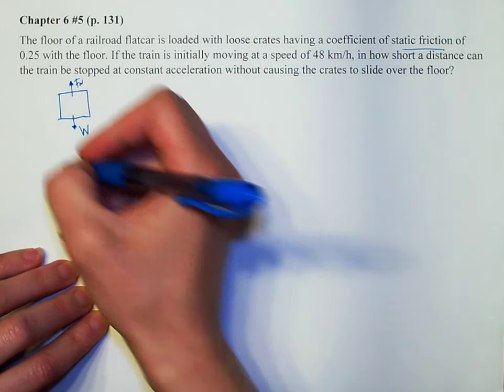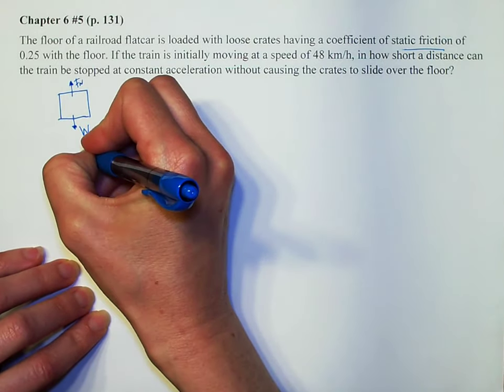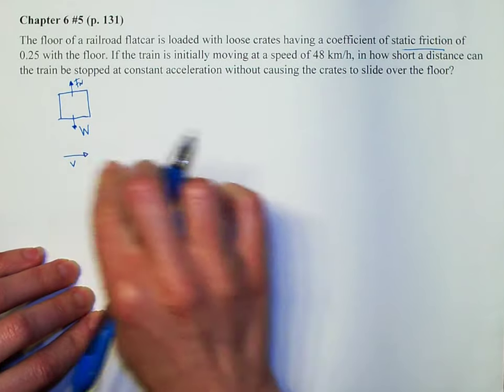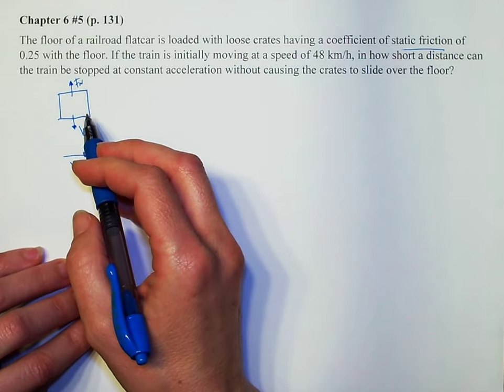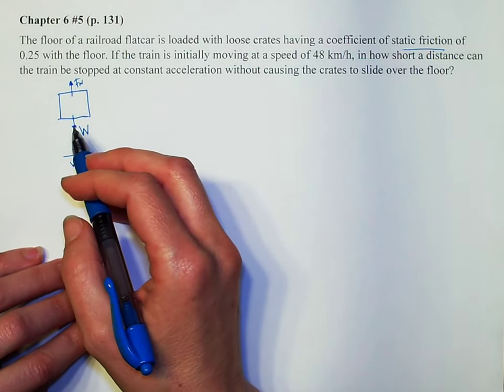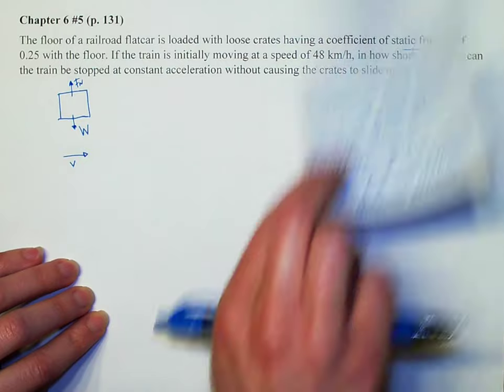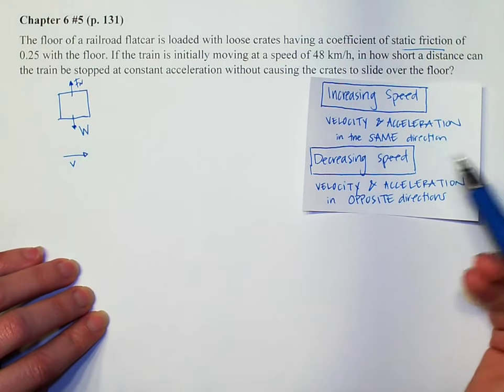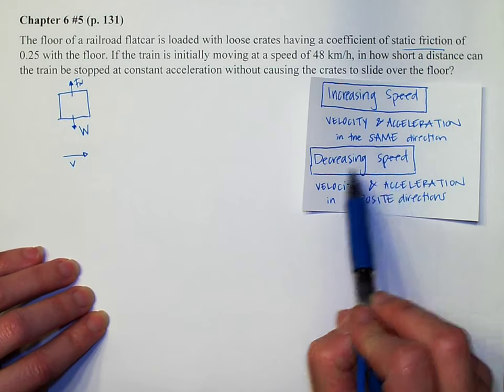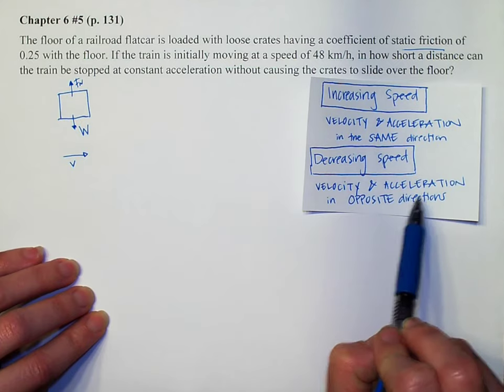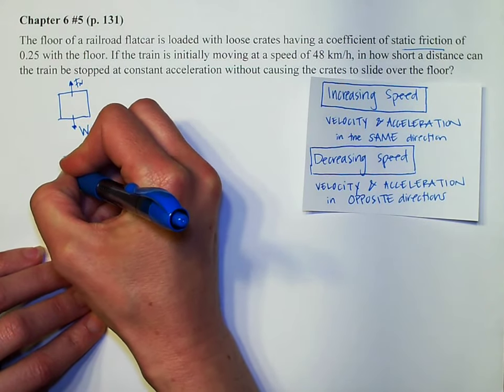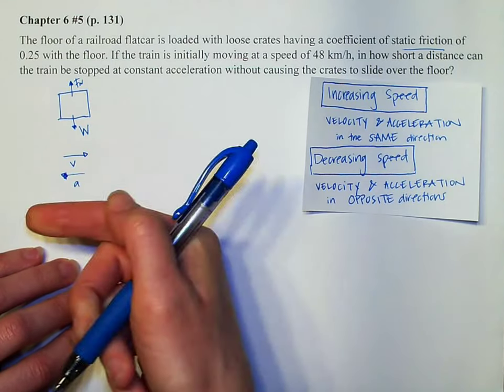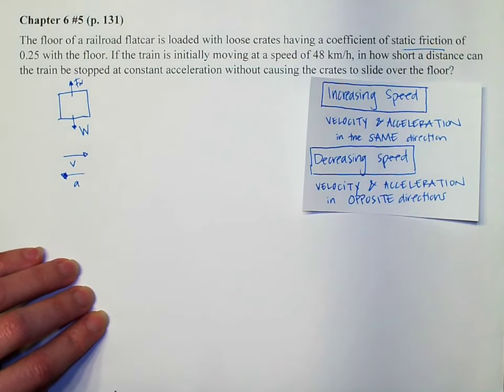Let's think about what direction friction is going. Let's say that my speed is in this direction, so my velocity is going that way. If I am now going to try to stop, first of all don't forget this: if I am decreasing speed, which is what we're doing, then velocity and acceleration are going to be in opposite directions. So my acceleration is going to be going in the opposite direction of my velocity.